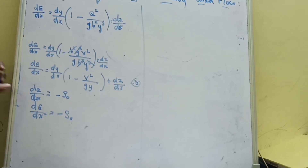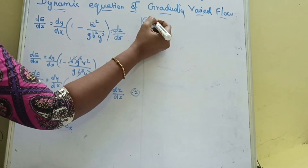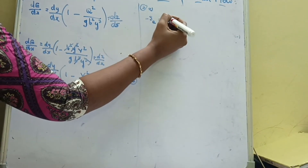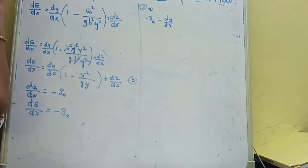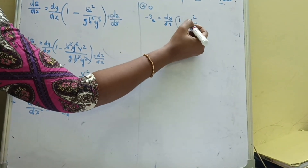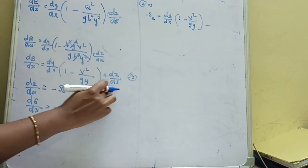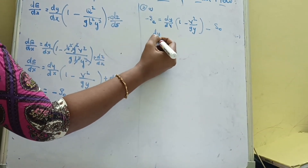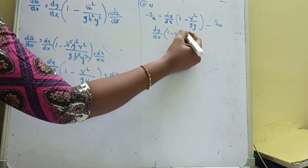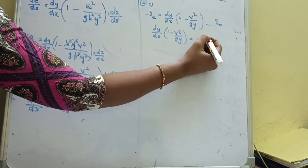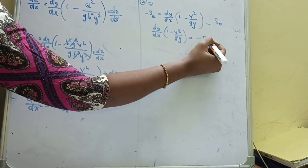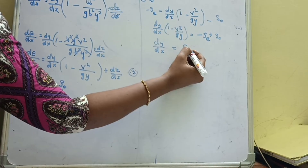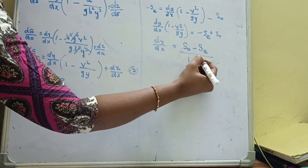Towards the flow direction the depth of the flow is decreasing, so dz/dx equals minus S-naught and dE/dx equals minus S-e. Substituting these into equation 3: minus S-e equals dy/dx times [1 minus V-squared/(gy)] minus S-naught. Rearranging: dy/dx times [1 minus V-squared/(gy)] equals minus S-e plus S-naught. Therefore, dy/dx equals (S-naught minus S-e) divided by [1 minus V-squared/(gy)].